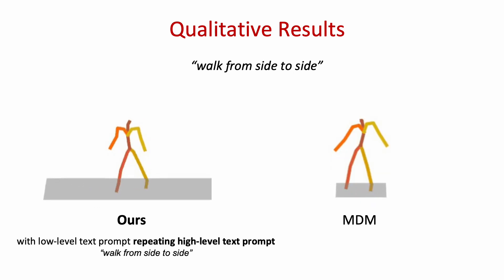In this example, we use low-level text prompt that repeats a high-level text prompt, walk from side to side. The generated motion of our model better aligns with the text prompt.